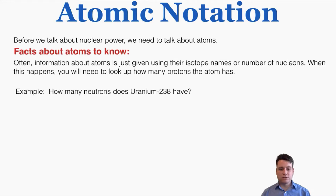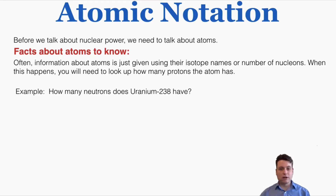Often, information about atoms is given using just their isotope name or number of nucleons. In this unit, for example, we'll use uranium-235 and uranium-238 quite a bit. When this happens, you'll need to look up how many protons the atom has using the periodic table, which also lets you calculate the number of neutrons: nucleons minus protons equals neutrons.